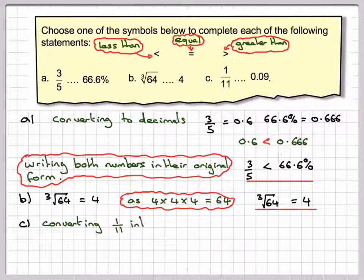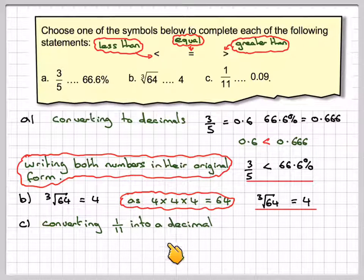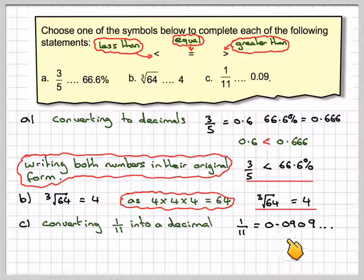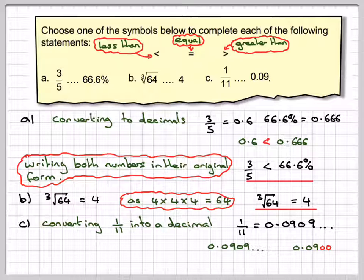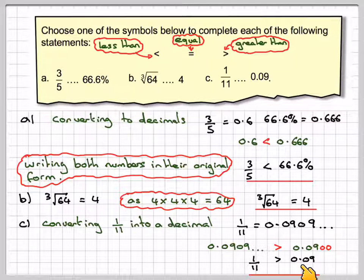For part c, 1/11 and 0.09. If we convert 1/11 into a decimal using our calculator, we get 1 over 11, which is equal to 0.09090909. It carries on forevermore - a recurring decimal. So we're now going to compare 0.090909 and 0.09, and we're going to add in these two extra zeroes. As you can see here, we've got 909 and 900. Therefore, this number is bigger than this number, so this symbol goes in, and we end up with, writing in its original format, 1/11 is greater than 0.09.